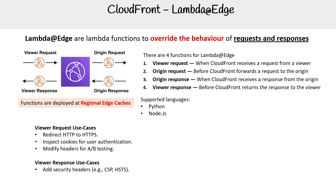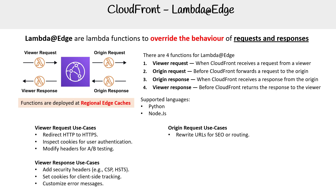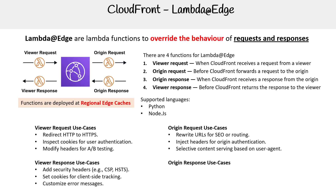For viewer response use cases, we can add security headers, set cookies for client-side tracking, and customize error messages. For origin request use cases, we rewrite URLs for SEO or routing, inject headers for origin authentication, and do selective content serving based on user agent.